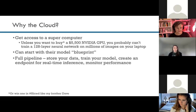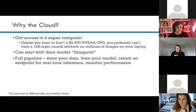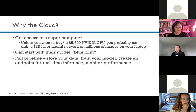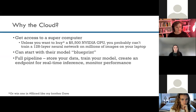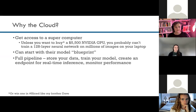Another benefit is you can start with their model blueprint. What I'll show today is basically getting started with AWS's base image classification model. One nice thing is that when you train these models, you spin up a computer to train it — it needs to have certain packages installed — and they have a Docker container ready to go with everything you need to do image classification. Finally, as I showed with the diagram, you can have a full pipeline. AWS can do everything from storing your data to training your model, creating an endpoint for real-time inference, and monitoring how your deployed model is doing.